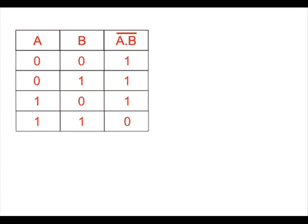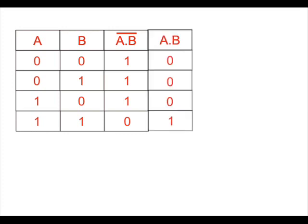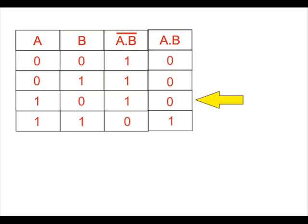It is just the reverse of the truth table of the AND gate, where the output is A dot B. When A and B are both 0, the output is 0. When A is 0 and B is 1, the output is 0. When A is 1 and B is 0, the output is 0. When both A and B are 1, the output is 1.